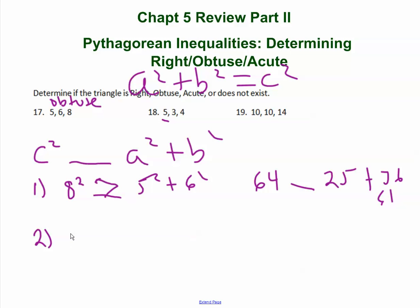5 is my c, so I have 5 squared blank 3 squared plus 4 squared. So that's nothing more than 25 blank 9 plus 16. Look at here, this is 25 right here.